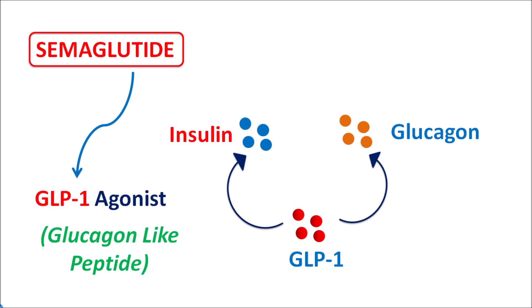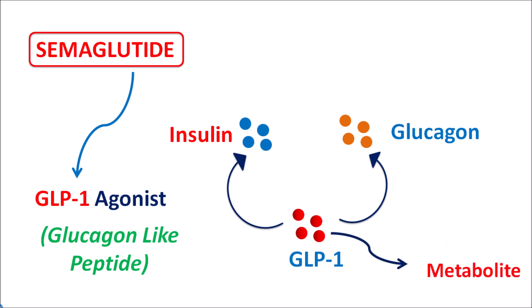However, glucagon-like peptide has a few limitations — it has a short duration of action and can be converted into metabolites by the enzyme DPP-4 (dipeptidyl peptidase-4). This enzyme controls the action of GLP-1, resulting in a very short duration of action. So GLP-1 is an endogenous mediator that controls glucose levels, but is limited by its short duration of action.